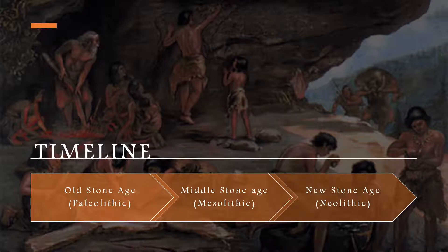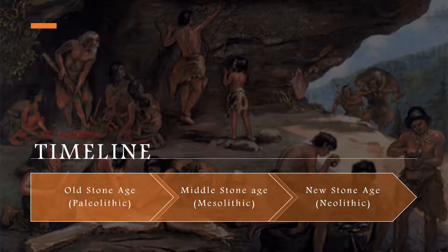It mainly passes by the Old Stone Age, Paleolithic, the Middle Stone Age, Mesolithic, and the New Stone Age, Neolithic. And some people consider it to also pass by the Iron and Bronze Ages too.